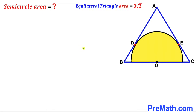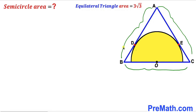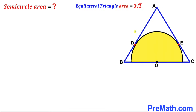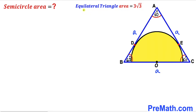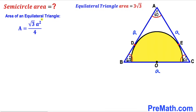Since we are dealing with an equilateral triangle, all side lengths are equal. Let's assume the side length is lowercase a across the board. Now let's recall that the interior angles of an equilateral triangle are 60 degrees each, so this angle is 60 degrees, likewise this angle is 60 degrees and 60 degrees. We know that the area of equilateral triangle ABC has been given to us as 3 times square root of 3.